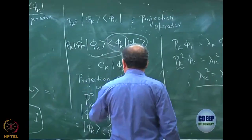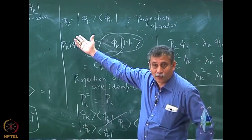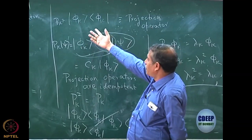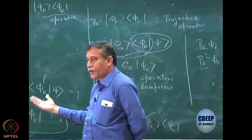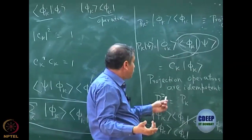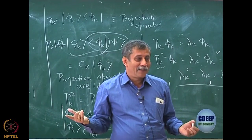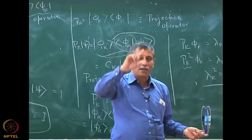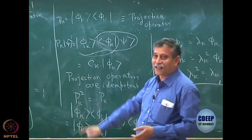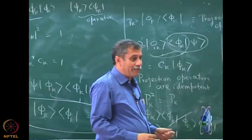Furthermore, this is a Hermitian operator — trivially, if you take the conjugate of |φ_k⟩⟨φ_k|, the ket becomes a bra and the bra becomes a ket, so it equals itself. Hermitian operators must have real eigenvalues, and those values are 0 and 1. You cannot have complex eigenvalues because Hermitian operators have real eigenvalues. So the complete chain of argument: it is Hermitian, no complex eigenvalues allowed, and the only real solutions of λ² = λ are 0 and 1.